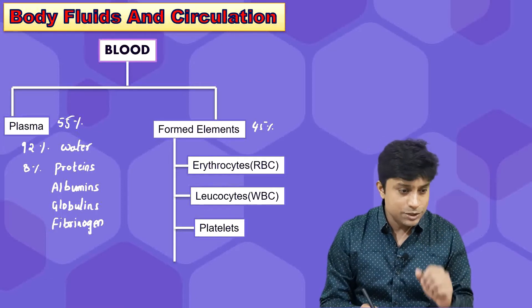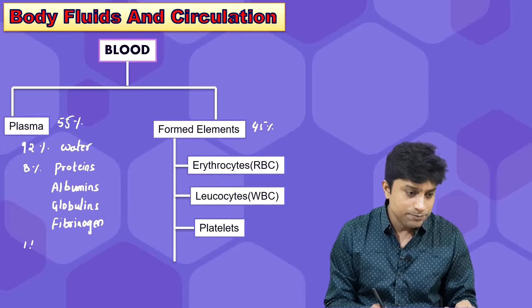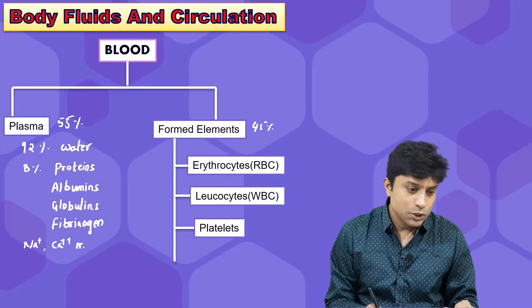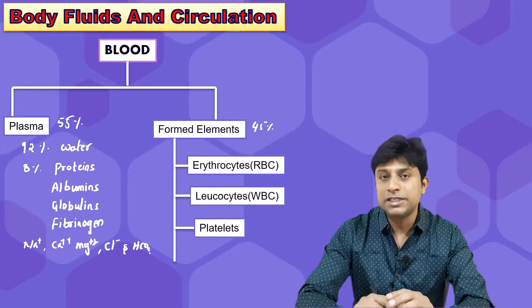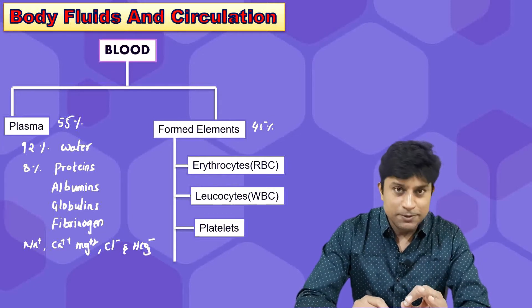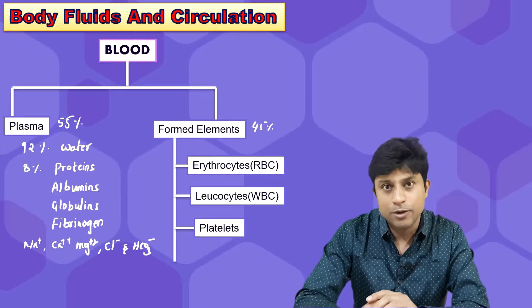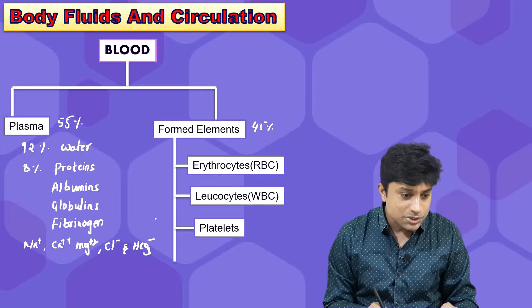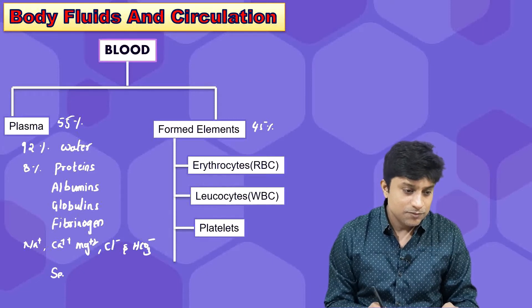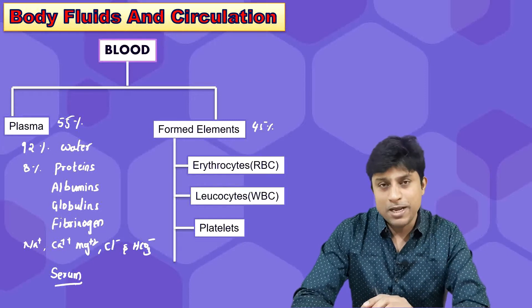Plasma also consists of some minerals, which include sodium, calcium, magnesium, chloride, and bicarbonate. Plasma mainly has clotting proteins like fibrinogen. Plasma minus fibrinogen is called serum.